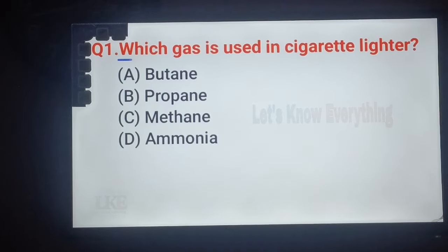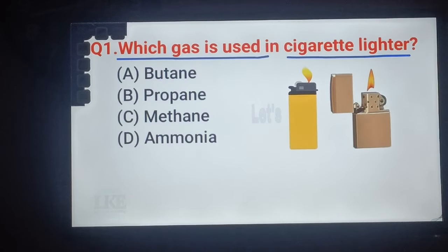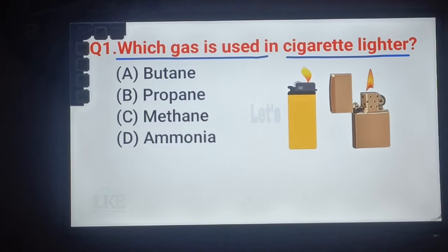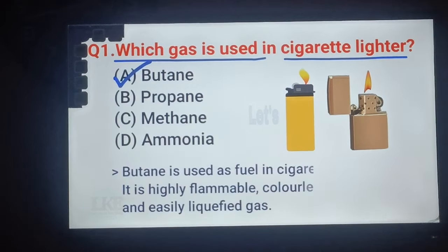First question: which gas is used in cigarette lighter? A. Butane, B. Propane, C. Methane, D. Ammonia. Right answer: option A, Butane.